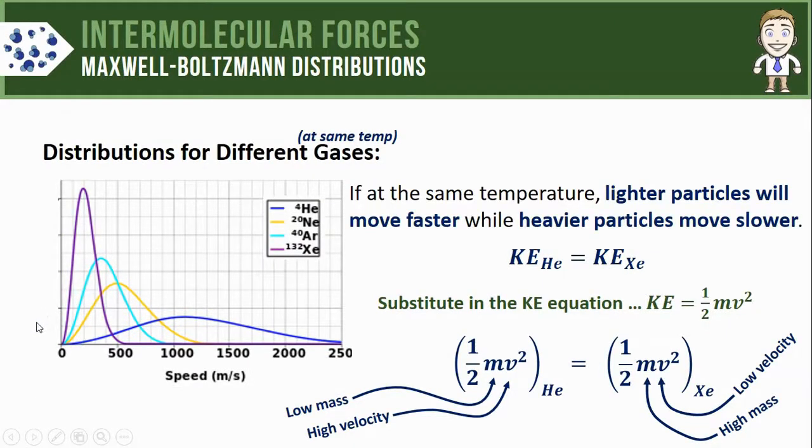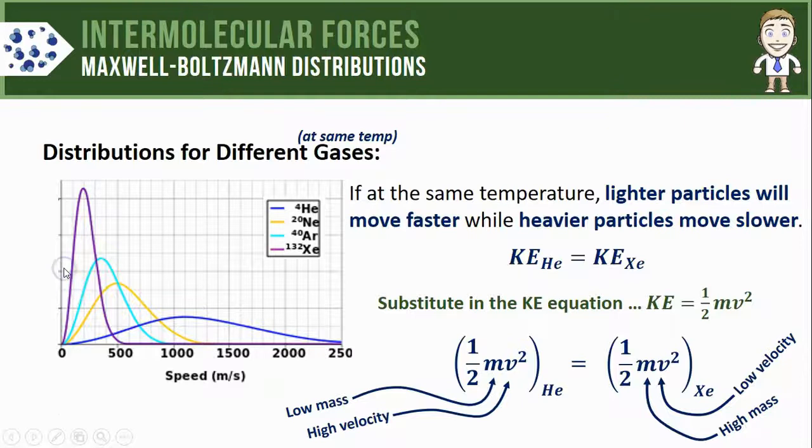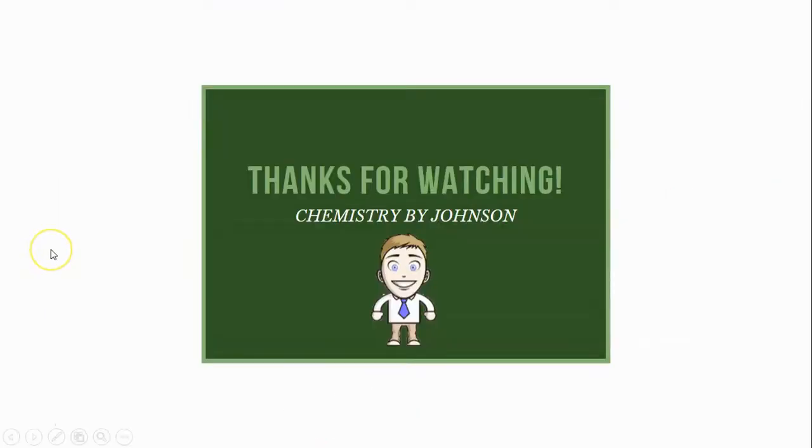We can summarize this by saying that if at the same temperature, lighter particles will move faster while heavier particles move slower. This is another one of the key ideas for the video. Make sure to take some time and write it down, and that also concludes this video on Maxwell-Boltzmann distributions. Thanks for watching.